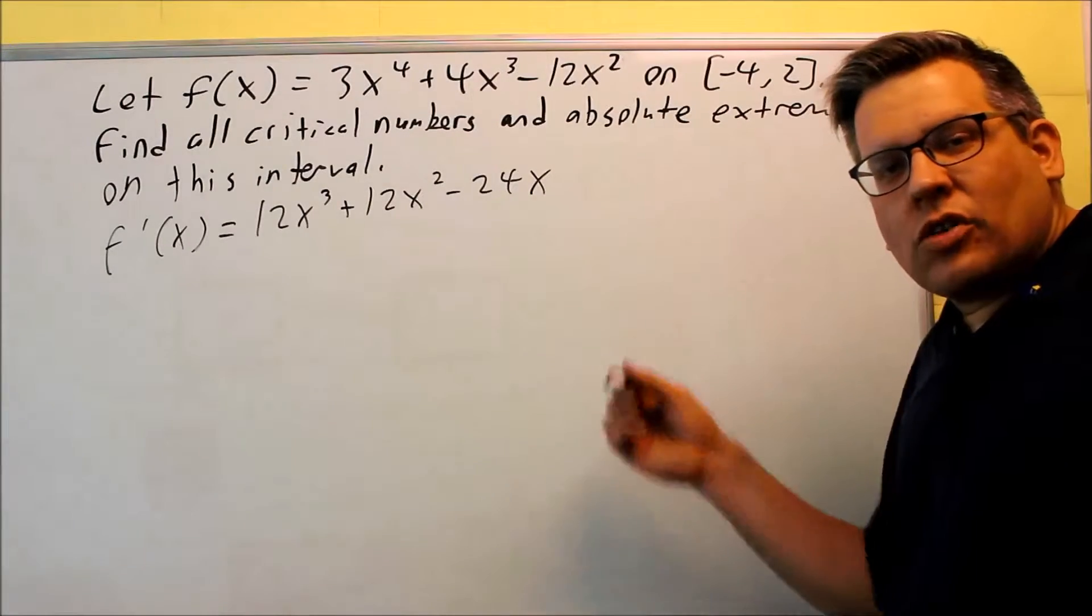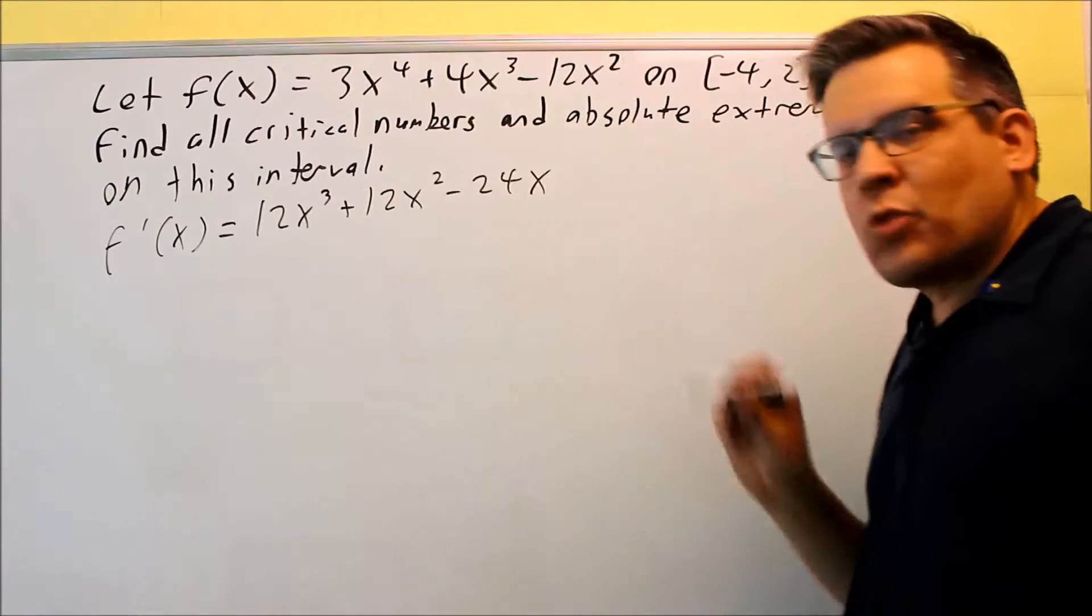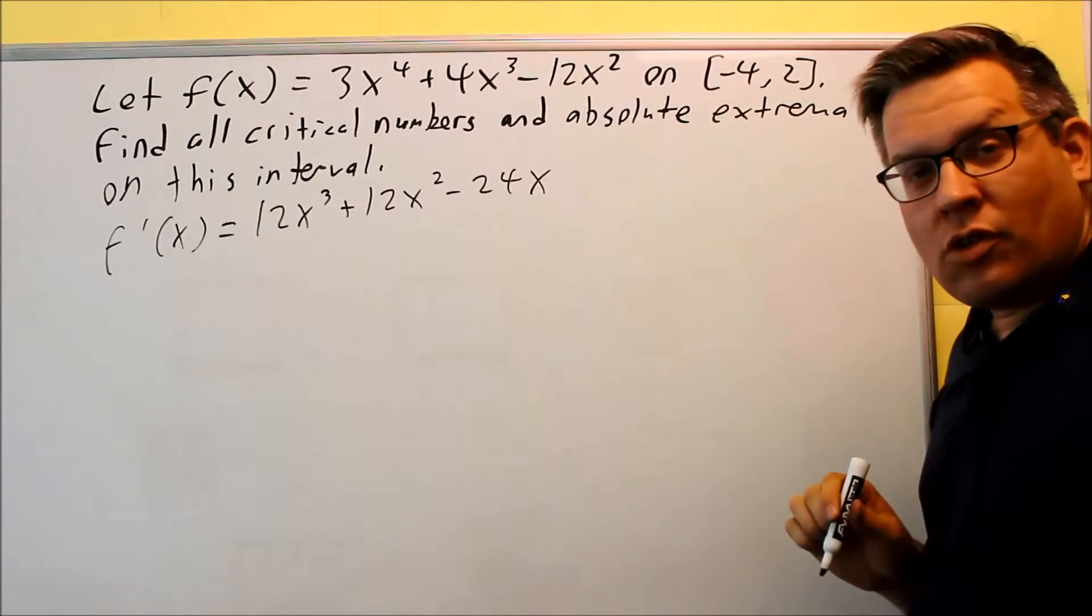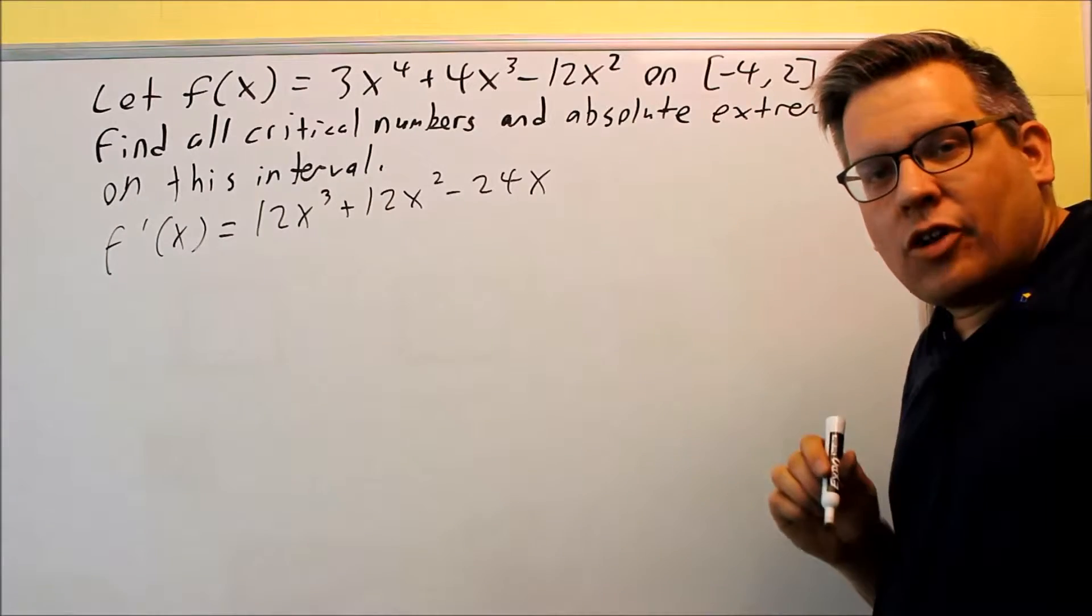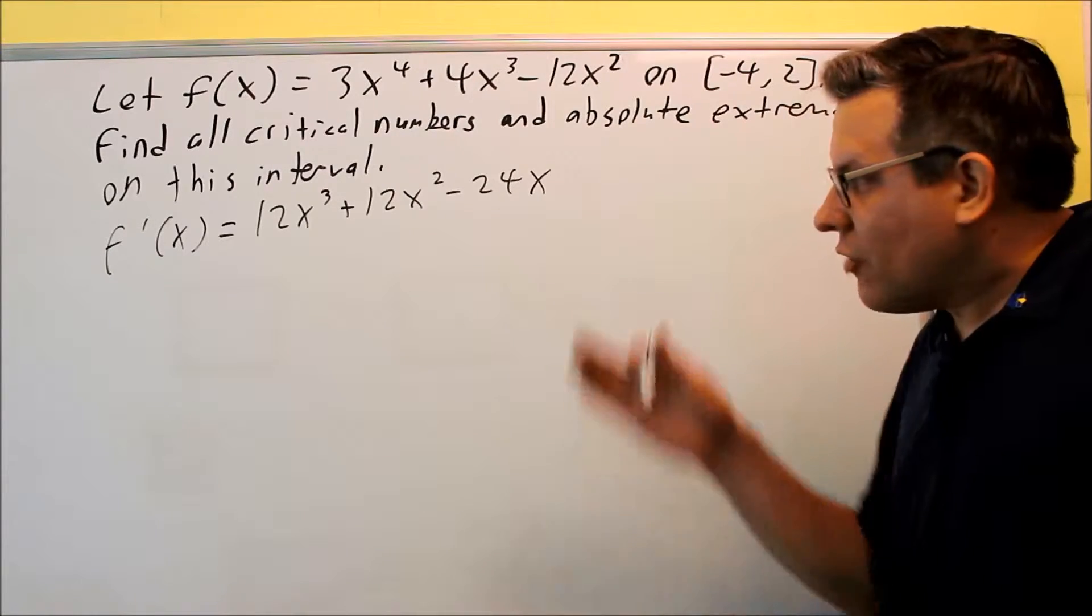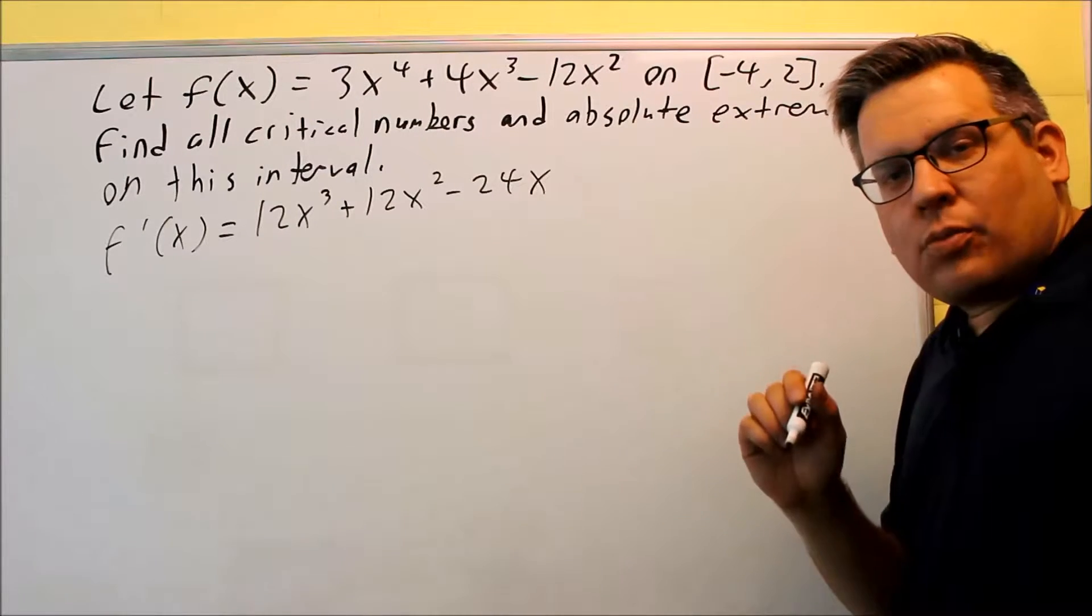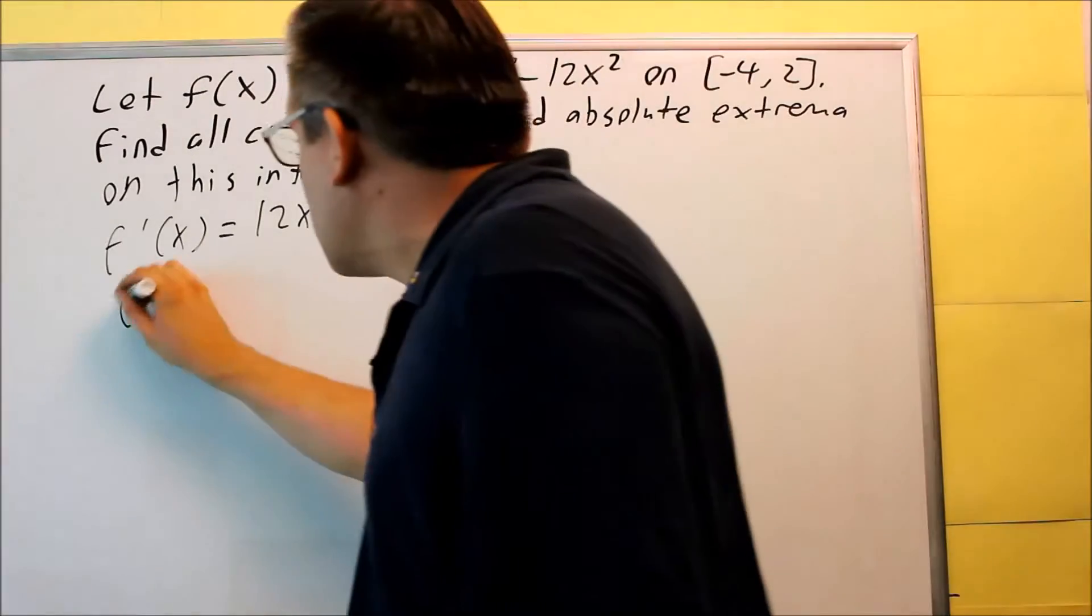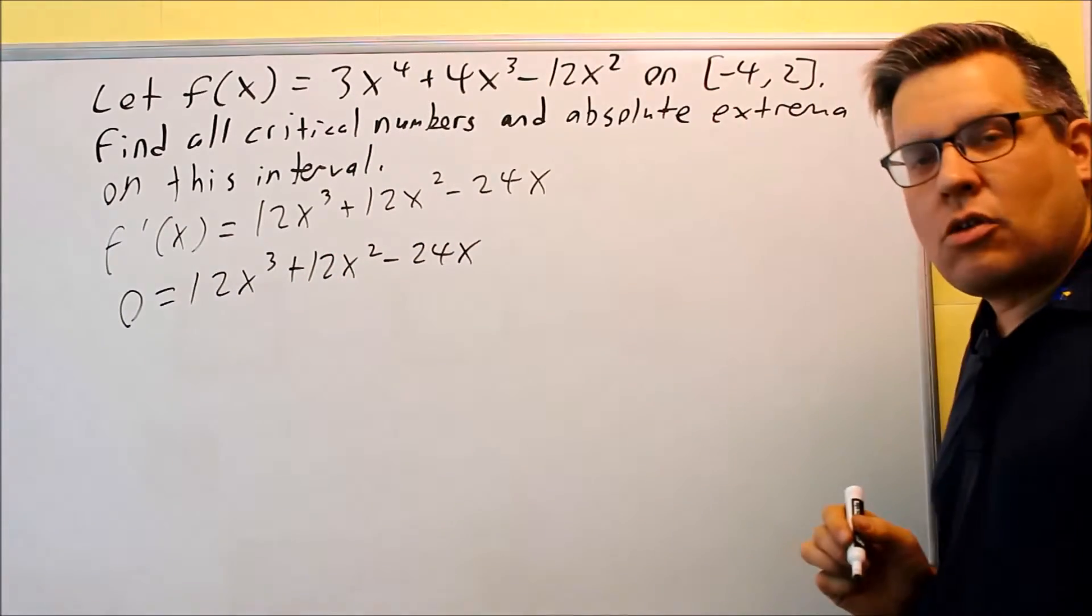There's two different things that we look for in order to find critical numbers. The first one is we look at if there's any place where the derivative is undefined. However, what we have here is a polynomial, and we know that polynomials are always going to be defined for all values from negative infinity to positive infinity. So the other way we can find a critical number is if we set the first derivative equal to zero. Zero equals 12x cubed plus 12x squared minus 24x, setting it equal to zero.